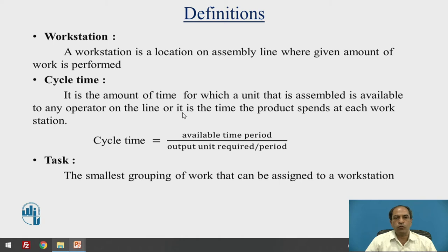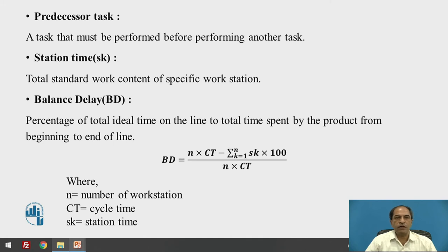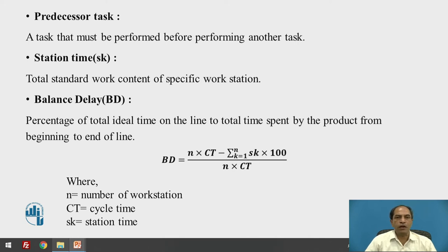A task is the smallest grouping of work that can be assigned to a workstation. A predecessor task is a task that must be performed before performing another task — it gives you the precedence requirement. For example, if I want to perform a drilling operation done with the help of a jig, then a facing or turning operation for that jig location is a precedence requirement before going for the drilling operation.